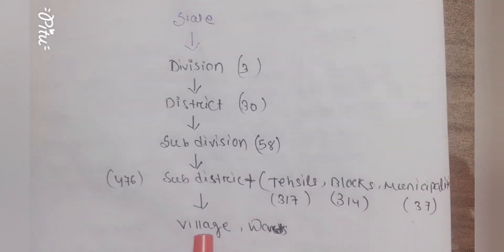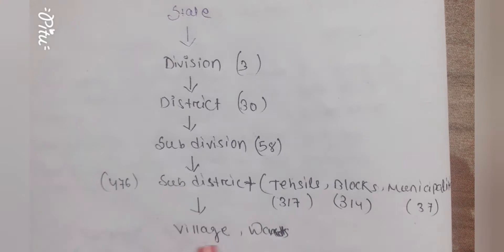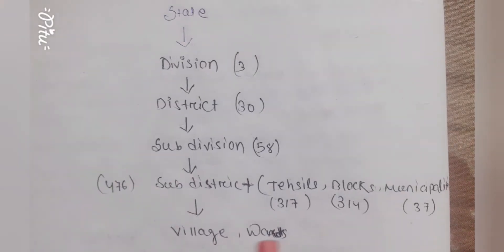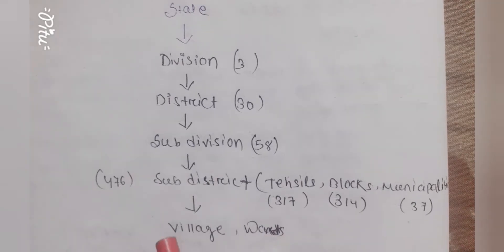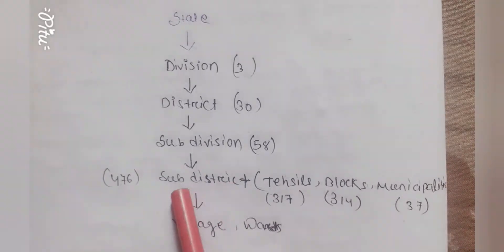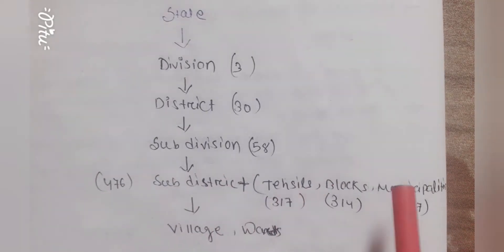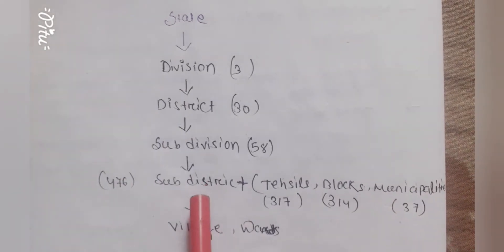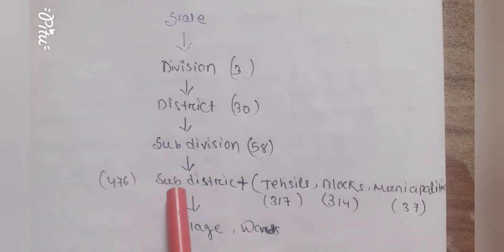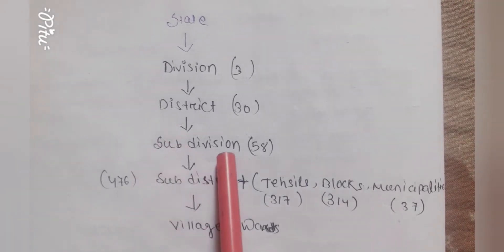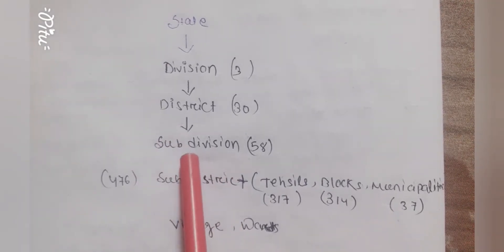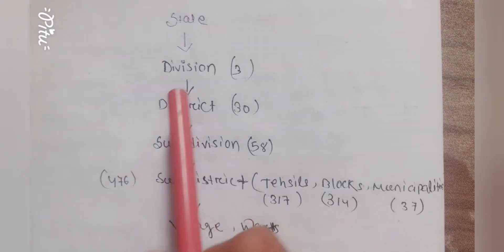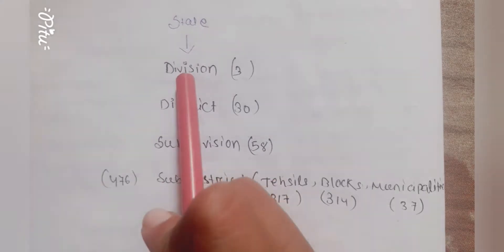In the government organization chart, the village is for rural areas and the ward is for urban areas. Some villages or wards collectively make a sub-district. Tahsils, blocks, and municipalities are called sub-districts. Some sub-districts make a district, some districts make a division, and some divisions make a state.